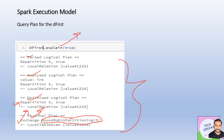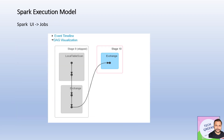Looking at this job on the Spark UI, I can see two stages were created because of the data shuffle from repartitioning. The first stage reads the data, and then that read data is shuffled to perform the repartitioning operation. So we see Stage 1 and Stage 2. Stage 1 does a local table scan, after which it performs an exchange to shuffle the data to the next stage where repartitioning happens.